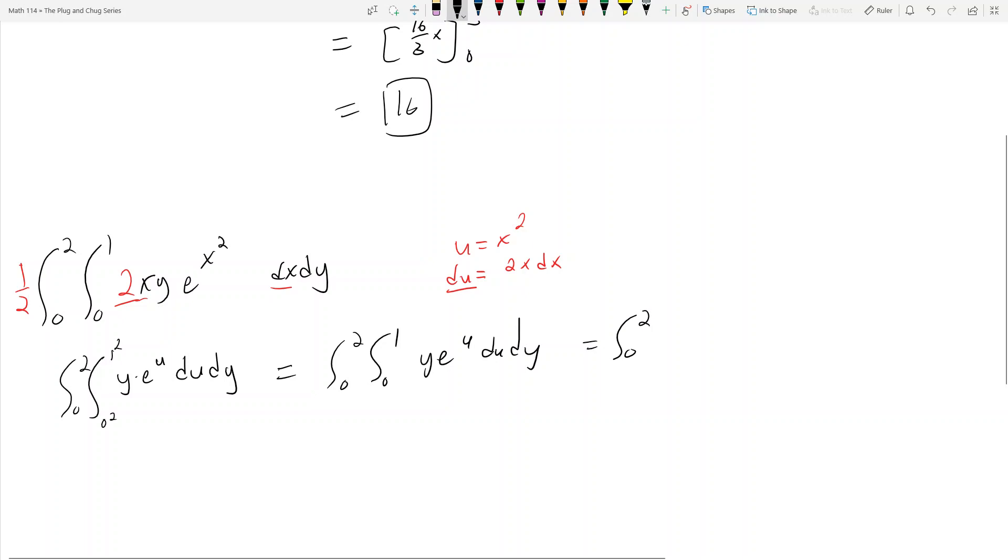Now if I integrate with respect to u, I get 0 to 2, this stays y e to the u evaluated from 0 to 1 because the integral of e to the u is just e to the u. It's y times e to the u, integral from 0 to 1. The y is going to be a constant with respect to u, right? So you just treat it as like a constant multiplying it out in front. So now this becomes 0 to 2, y times e to the 1 minus e to the 0. Be careful, e to the 0 is not 0, that's a common mistake that we make. This becomes e minus 1.